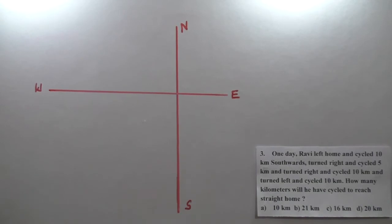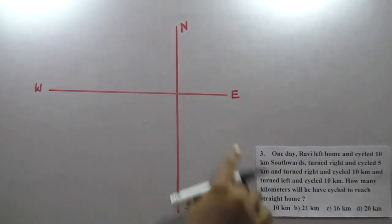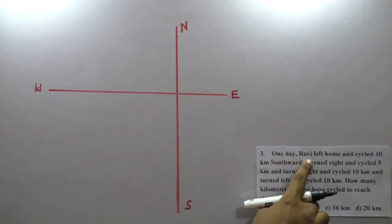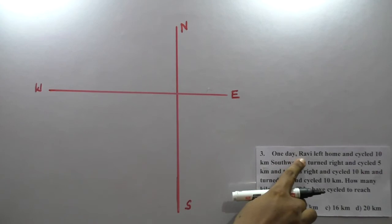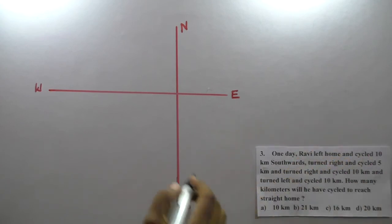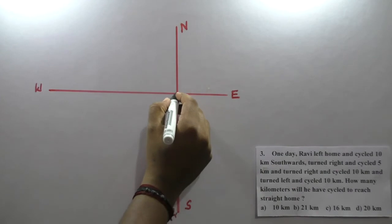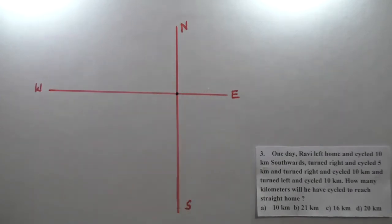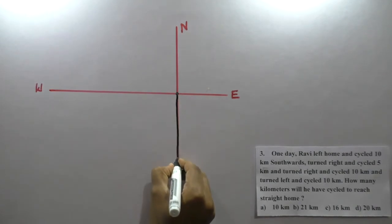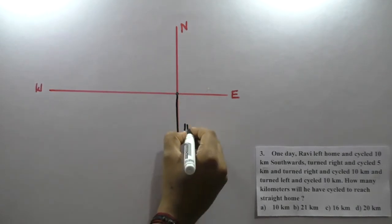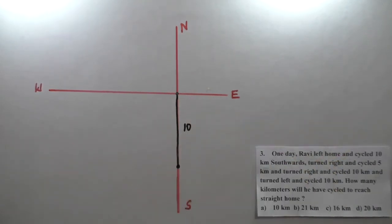Hi friends, now we will talk about the topic of directions — north, south, west, east. One day Ravi left home and cycled 10 kilometers southwards. So from the starting point, he is moving 10 kilometers southwards.